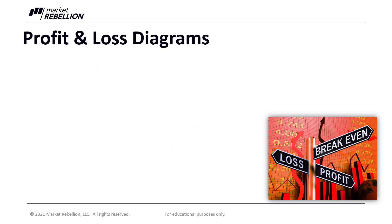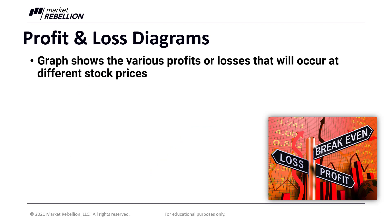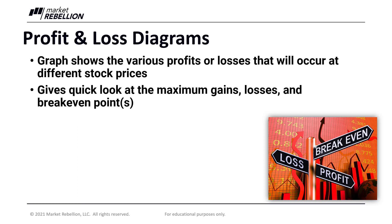So what exactly is a profit and loss diagram? It's simply a graph that shows the various profits or losses that will occur at different stock prices. It essentially gives you a quick look at the maximum gains, losses, and your break-even points. Sometimes you'll hear these called a risk graph or a risk curve, but they're all three different terms that mean the same thing — profit and loss diagram, risk graph, and risk curve — all talking about the different ways we can visualize profits and losses for various strategies.